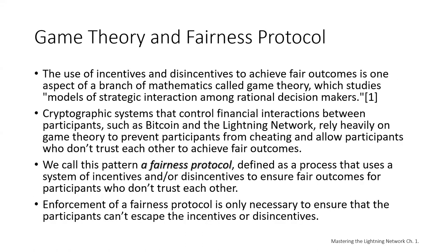The use of incentives and disincentives to achieve fair outcomes is one aspect of a branch of mathematics called game theory, which studies models of strategic interaction among rational decision makers. Cryptographic systems that control financial interactions — including Bitcoin and Lightning — rely heavily on game theory to prevent participants from cheating and allow participants who don't trust each other to achieve fair outcomes. Chances are you're already familiar with these systems in your everyday life — you just don't recognize them. We'll use a simple example from childhood to help identify the basic pattern.